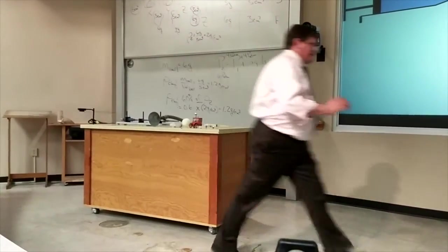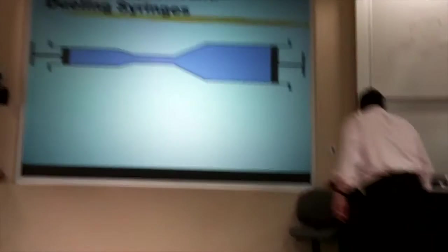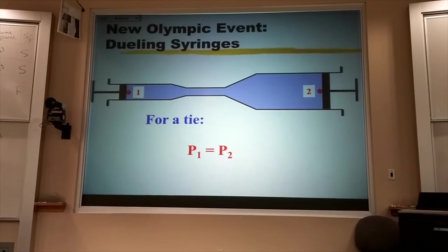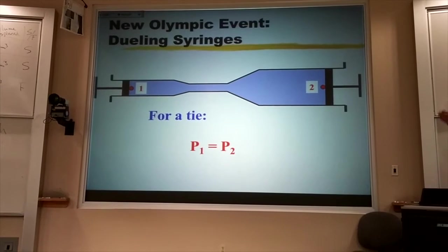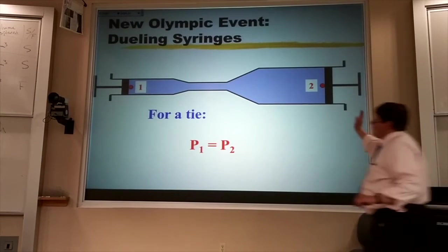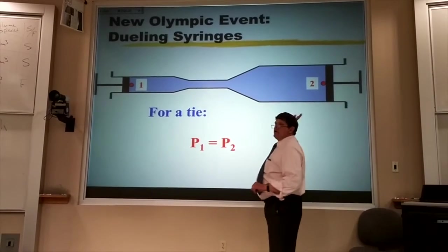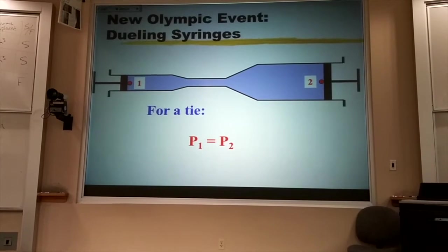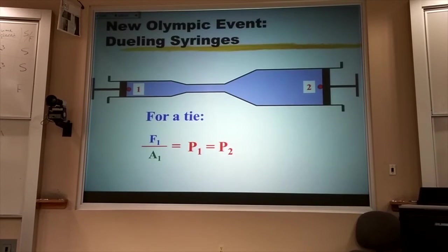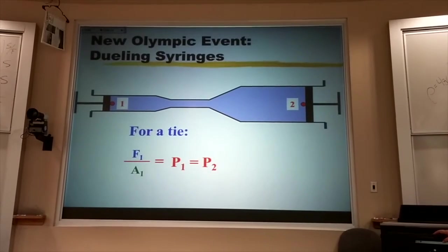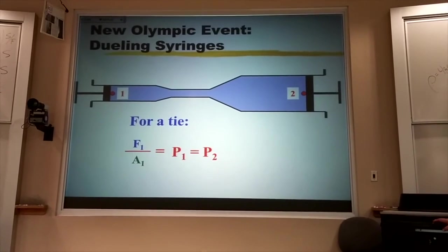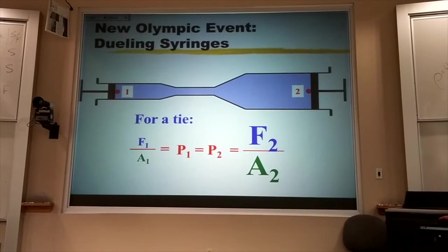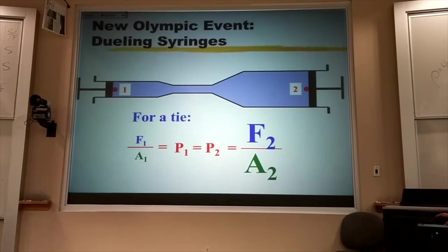And that's because if they create the same pressure right next to their plunger, it's going to be a tie. No water's going to go to the left, no water's going to go to the right. But that's if the pressure's the same. But the pressure is the force divided by the area. So that means whoever's got the bigger area of the plunger has to provide a bigger force just to tie.